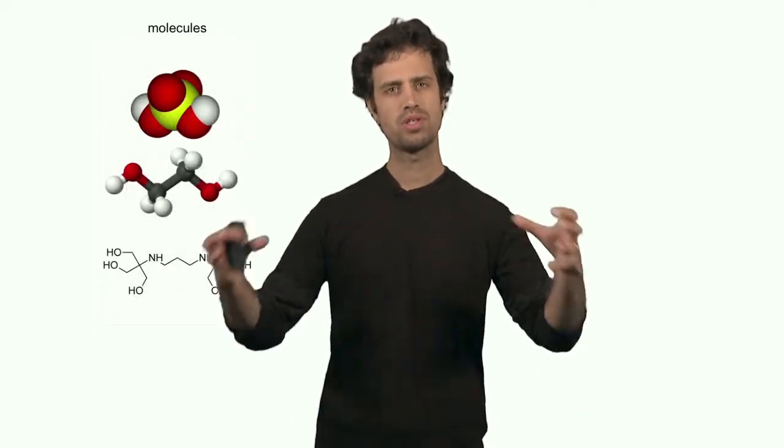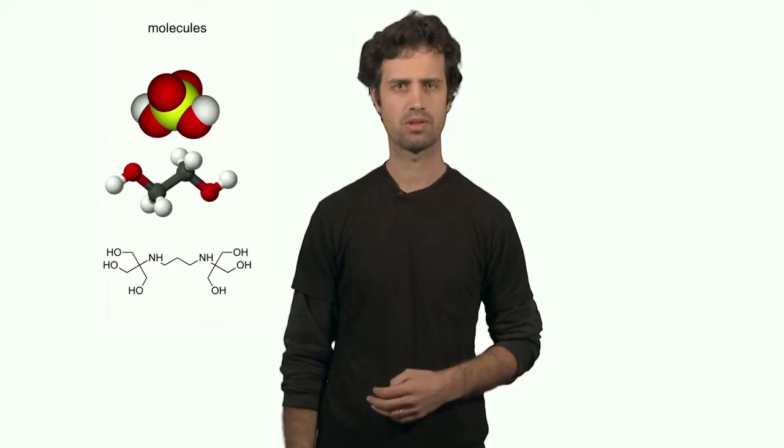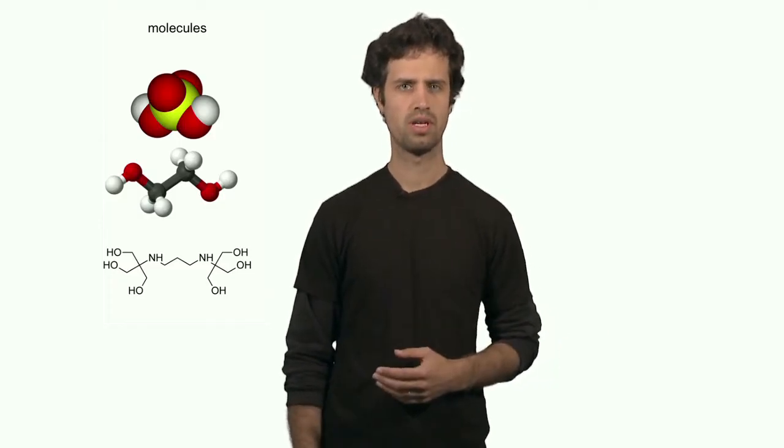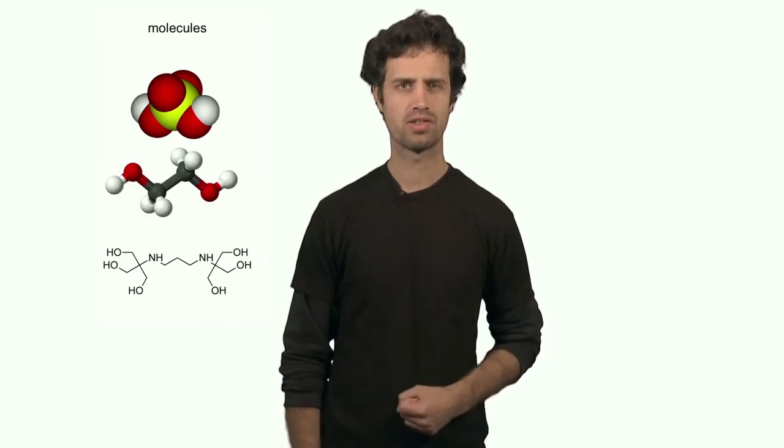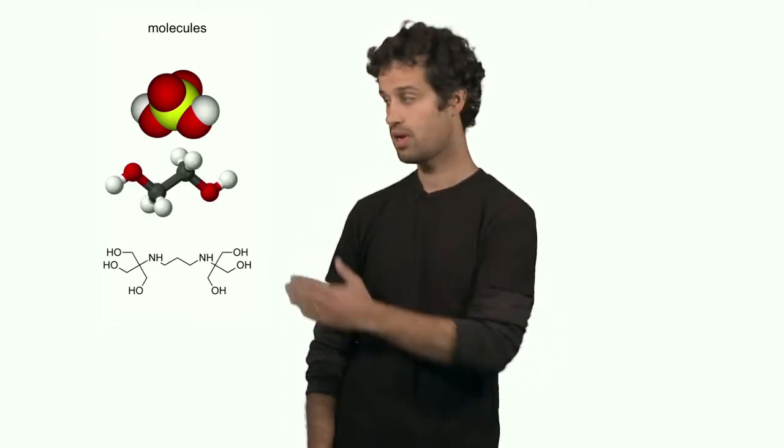We also learned that if you put two atoms together, or more atoms together, you can form polyatomic compounds, for instance polyatomic anions or molecules. We learned about molecular formulas and ways to represent the structure of the molecule, for instance through a line structure.